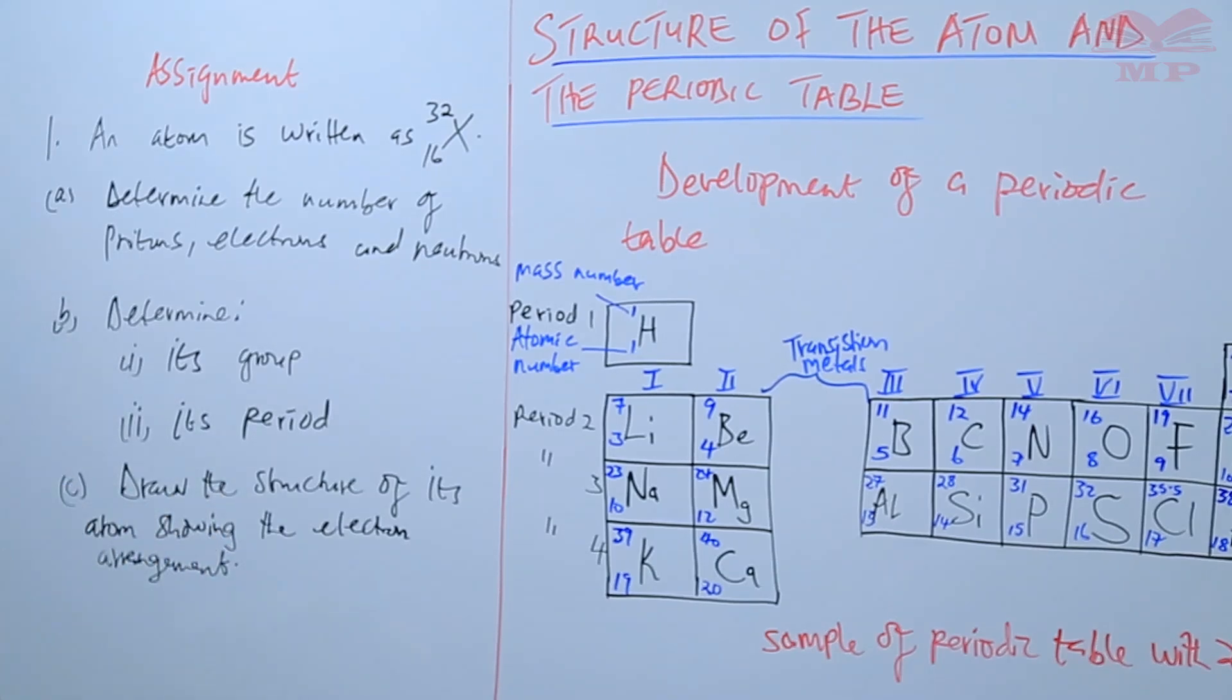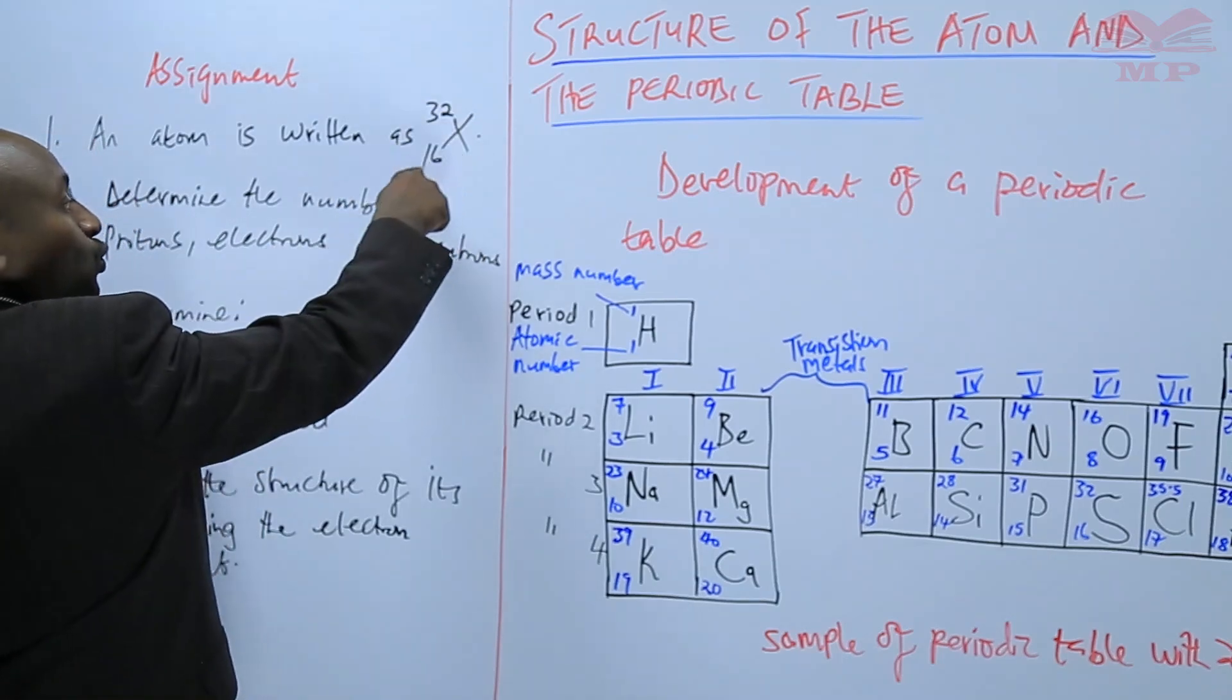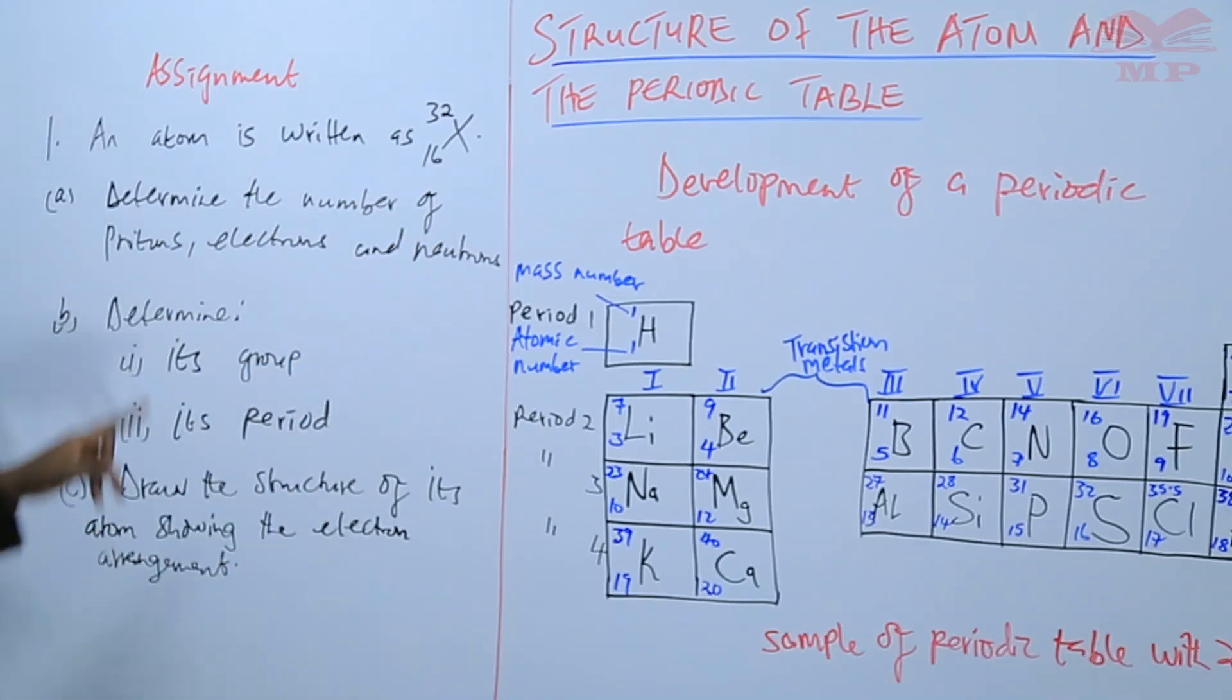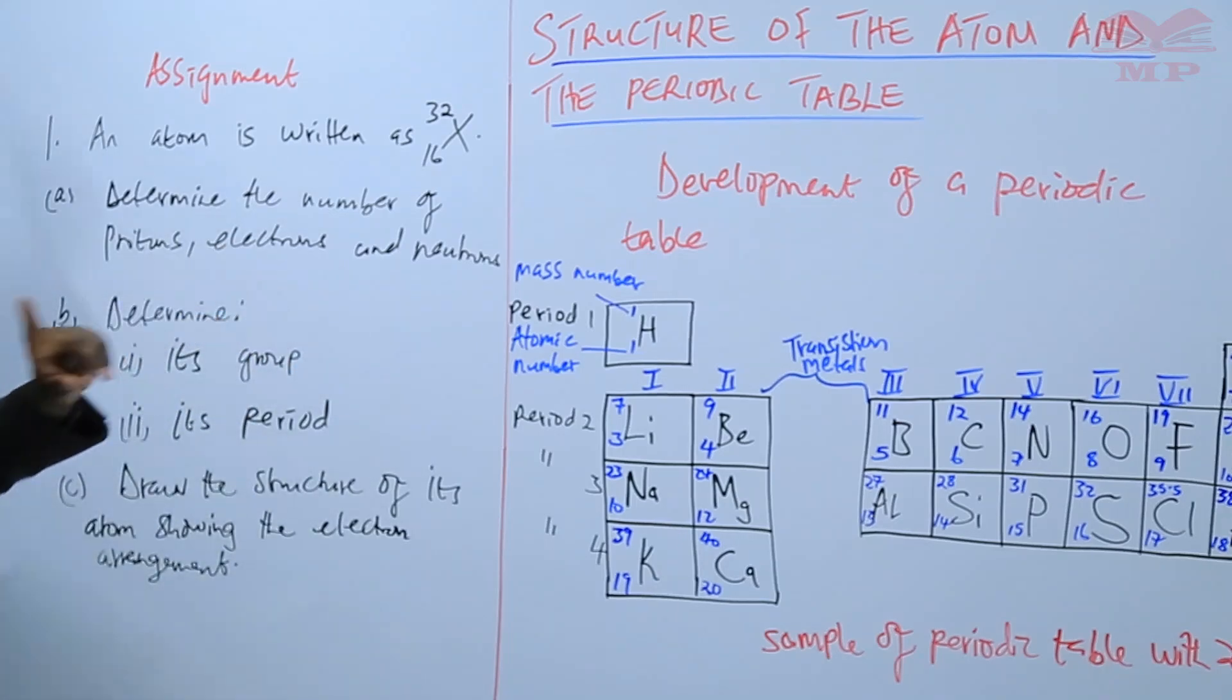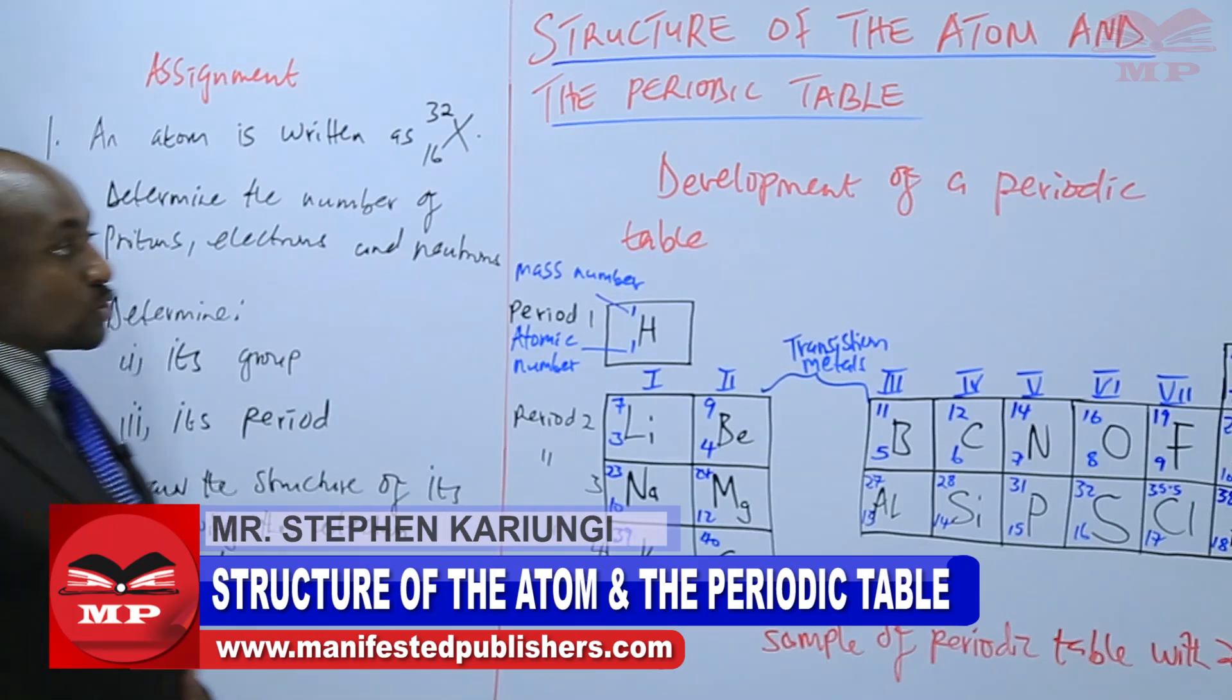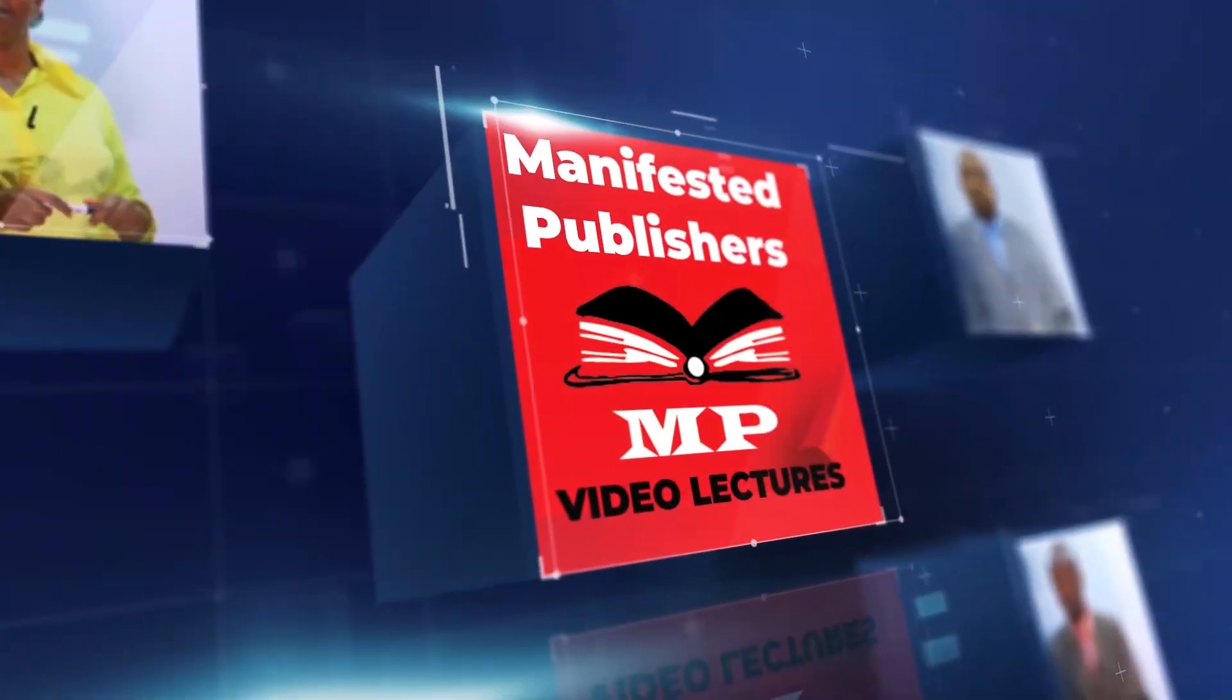The assignment: an atom is written as X with 2 as the superscript and 16 as the subscript. Determine the number of protons, neutrons, and electrons that are present. Part B, determine its group and also its period. And then C, draw the structure of its atom showing the electron arrangement. We are going to stop there until next time, goodbye.